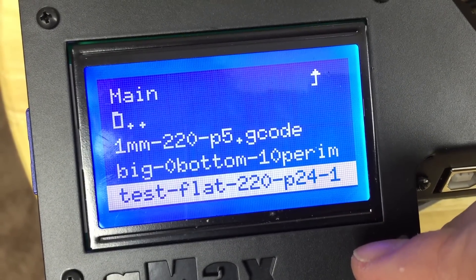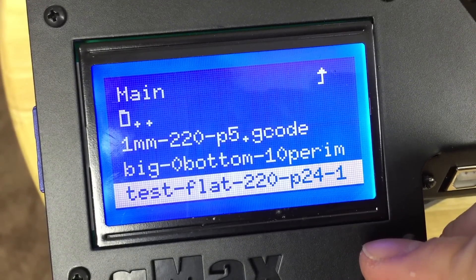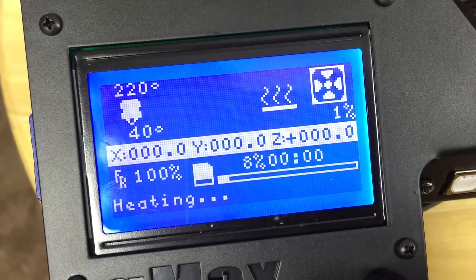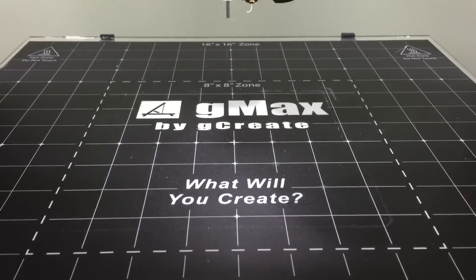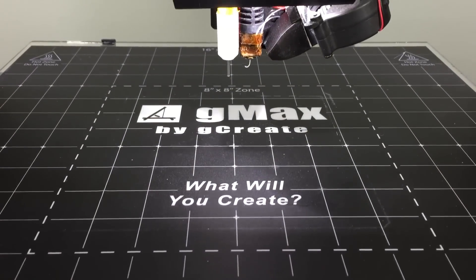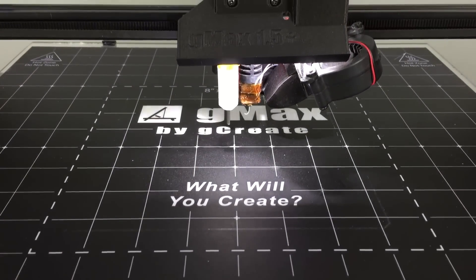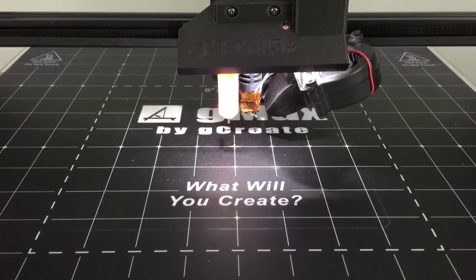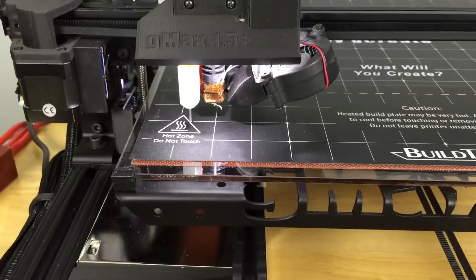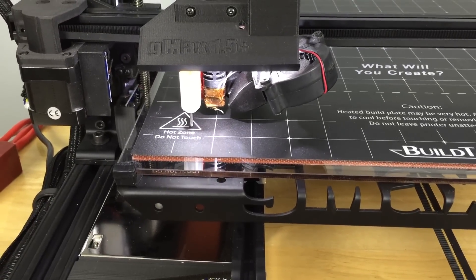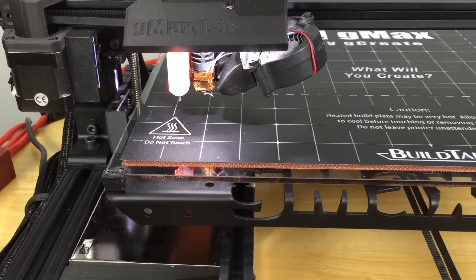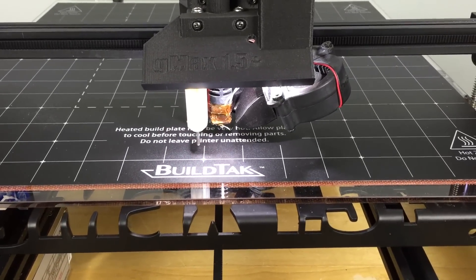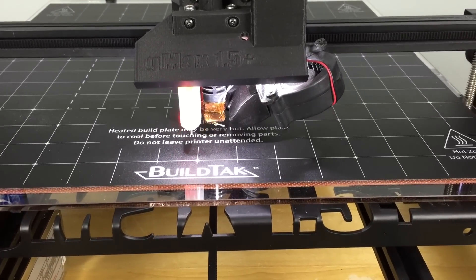When you do that, the printer starts along its process. You'll see the screen show the nozzle heating up. Once the nozzle is done heating up, it will begin the automatic bed leveling procedure using the BL-Touch. The BL-Touch probes three different spots in three different rows, for a total of nine, to get a layout of the bed so it can print evenly across it.